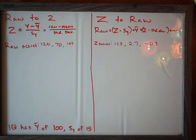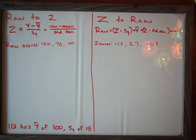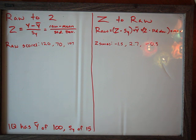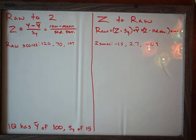In this video we're going to convert raw scores to z-scores and z-scores to raw scores. Raw scores are the actual values in the data that you're using. Z-scores are a standardized score that allow you to compare across data sets and allow you to use the standard normal table and other things. Z-scores are measured in standard deviations — they tell you how many standard deviations a given raw score is from the mean.